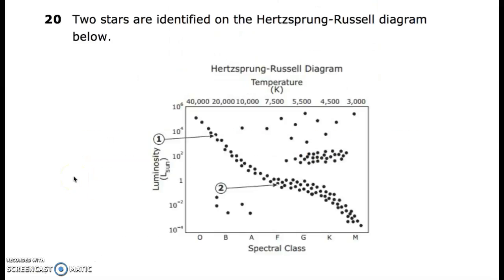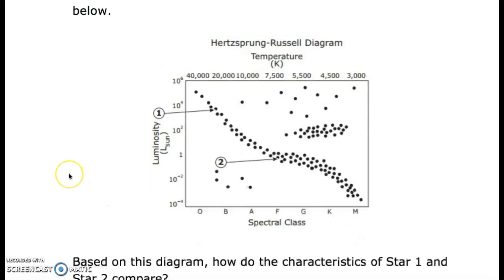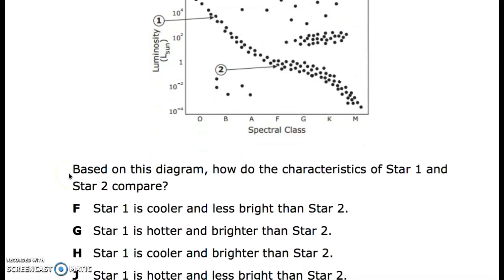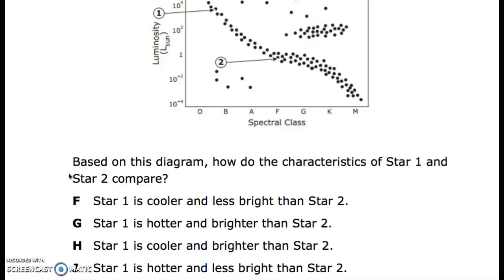20. Two stars are identified on the Hertzsprung-Russell diagram below. This is temperature in Kelvin, luminosity, spectral class. Based on this diagram, how do the characteristics of star 1 and star 2 compare? Star 1 is cooler and less bright than star 2. Star 1 is hotter and brighter than star 2. Star 1 is cooler and brighter than star 2. Star 1 is hotter and less bright than star 2.